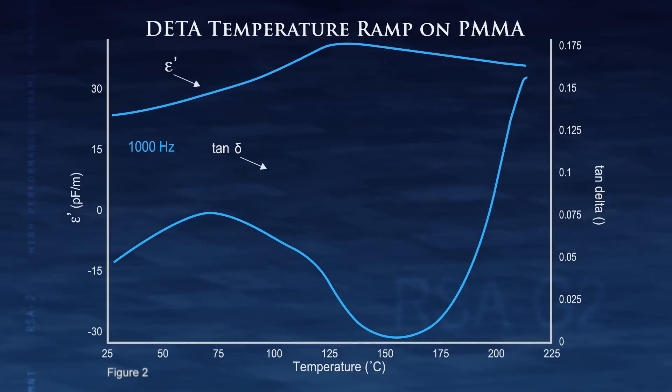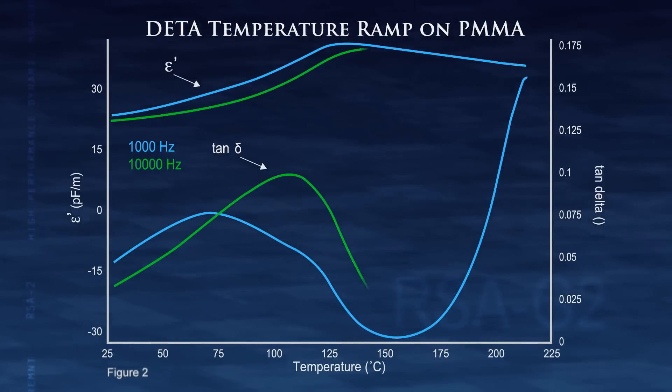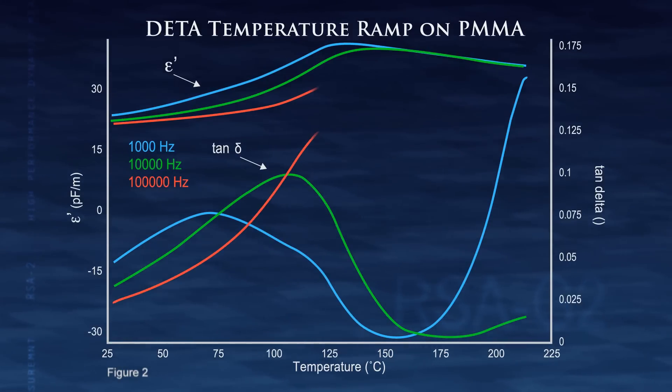Figure 2 shows an example of a ramp on a polymethyl methacrylate sample at four different dielectric frequencies, ranging from 1,000 to 1 million hertz.